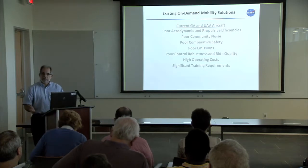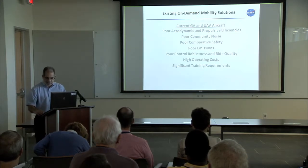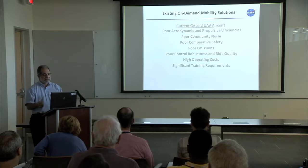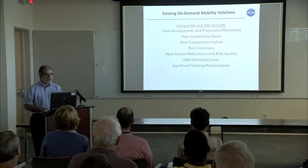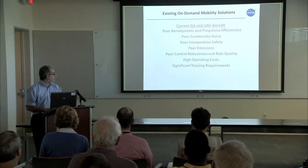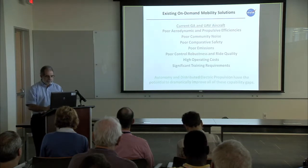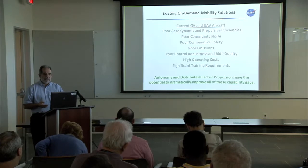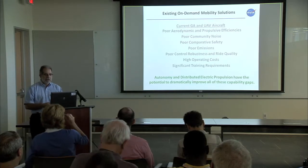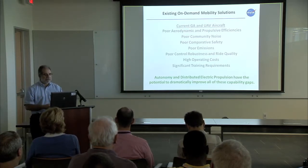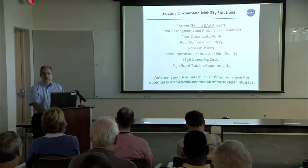On-demand mobility solutions do exist but have limitations. Those include GA aircraft for transporting people and, just coming out now, UAVs for package delivery. What they have in common is poor aerodynamic and propulsive efficiencies, poor community noise, comparative safety concerns, emissions control issues, high operating costs, and significant training requirements. Autonomy and distributed electric propulsion have the potential to dramatically improve all of those gap areas.